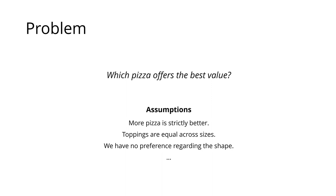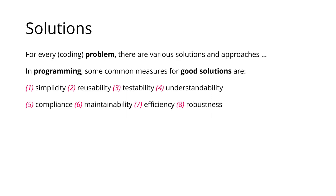Before we go into the code, let's briefly talk about solutions. For every coding problem, or for any problem in general, there are various solutions and approaches we can take. In programming, we have some common measures for good solutions. These include simplicity — the solution we are building should be as simple as possible, and we don't want to add more complexity than we need to.